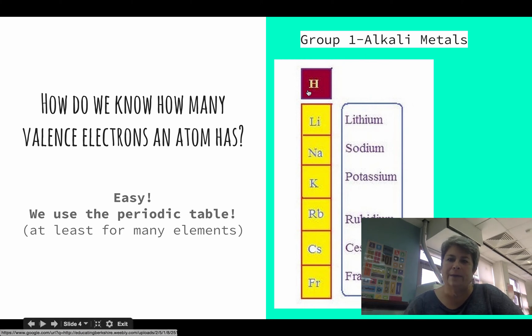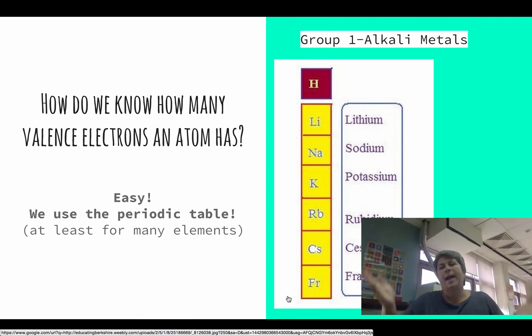Group one, the alkali metals and hydrogen, all of these elements, their atoms have one valence electron. That means that they have one electron in that outermost energy level that are very, very high energy and are involved in the bonding.